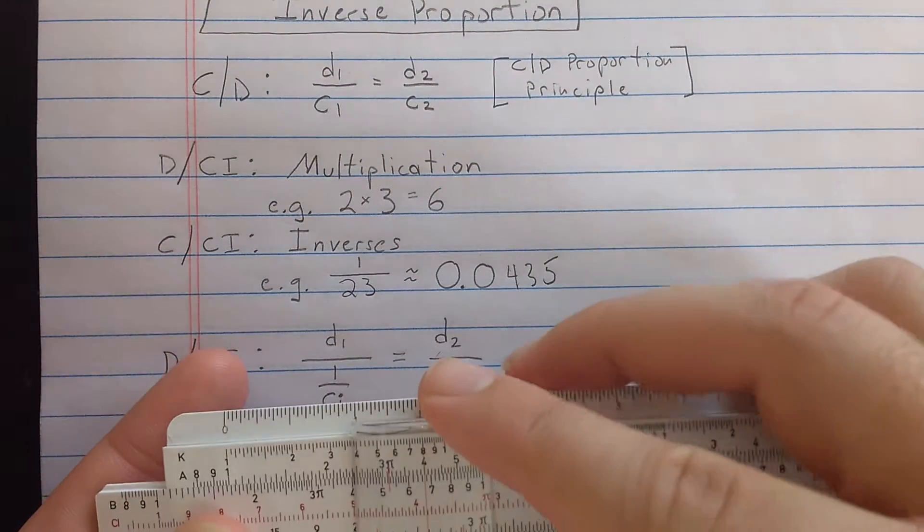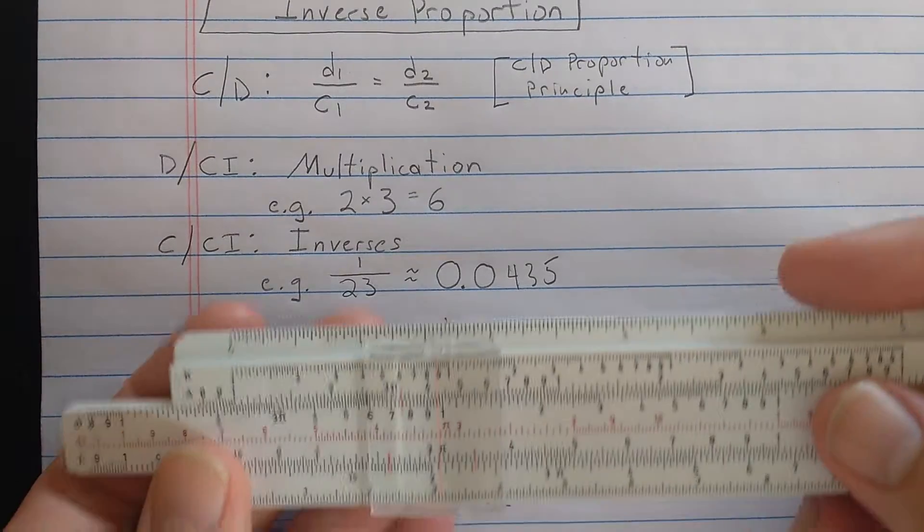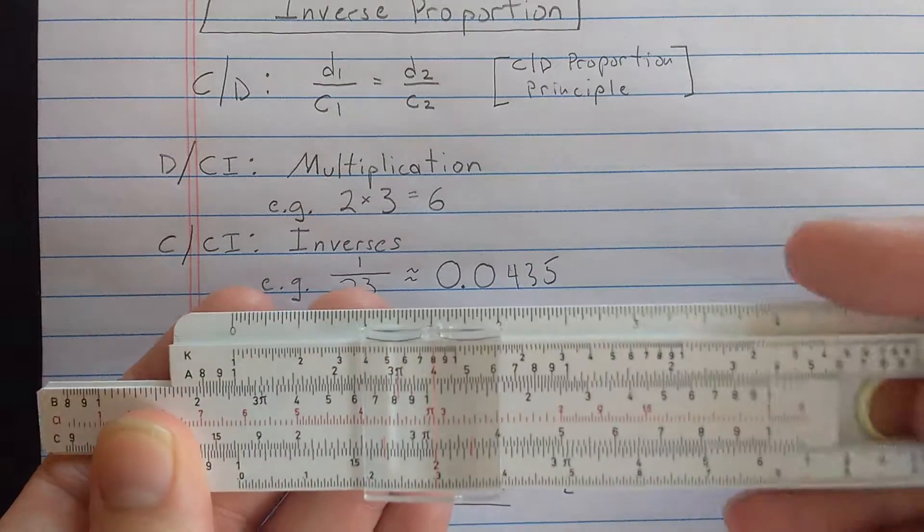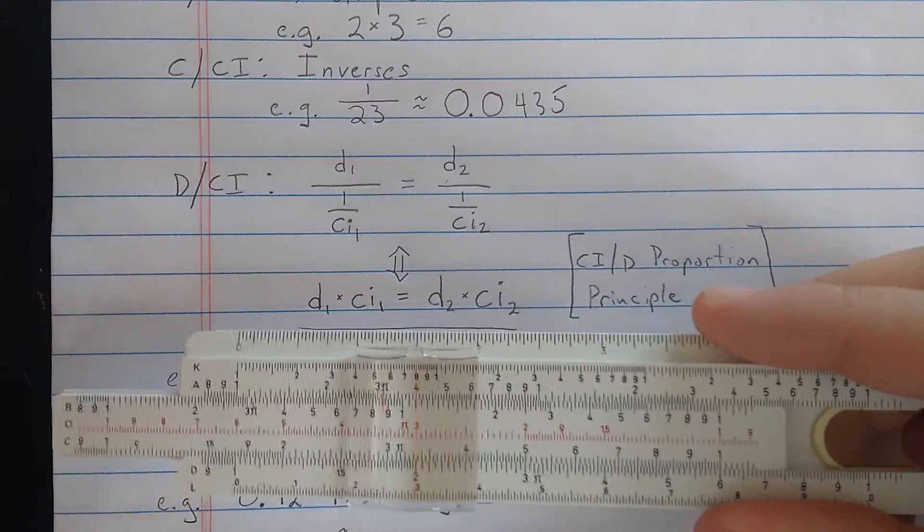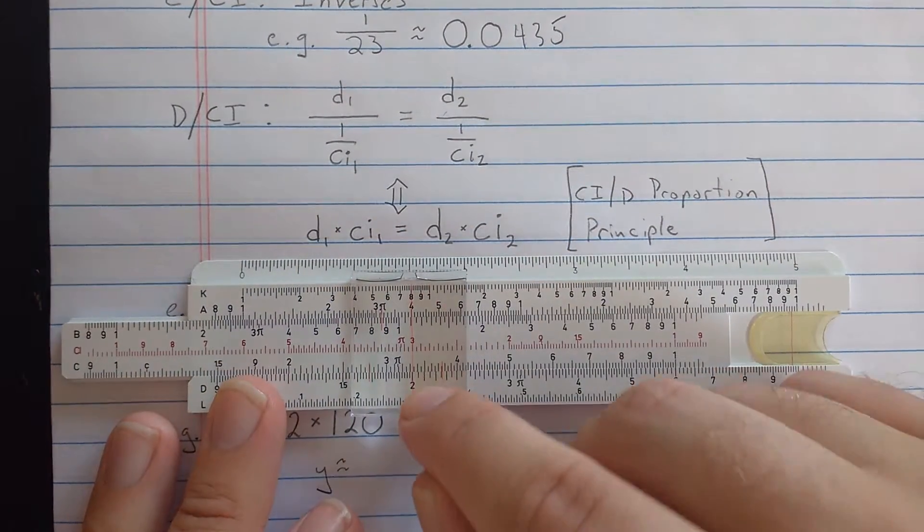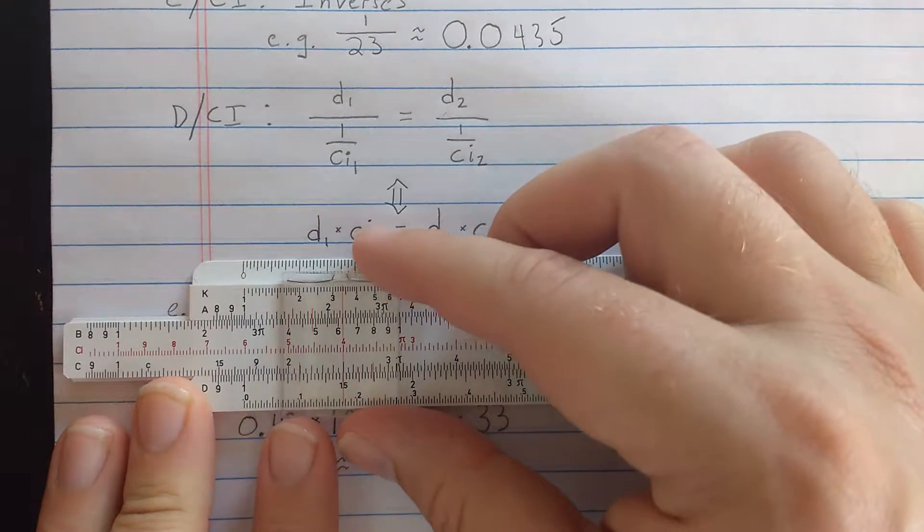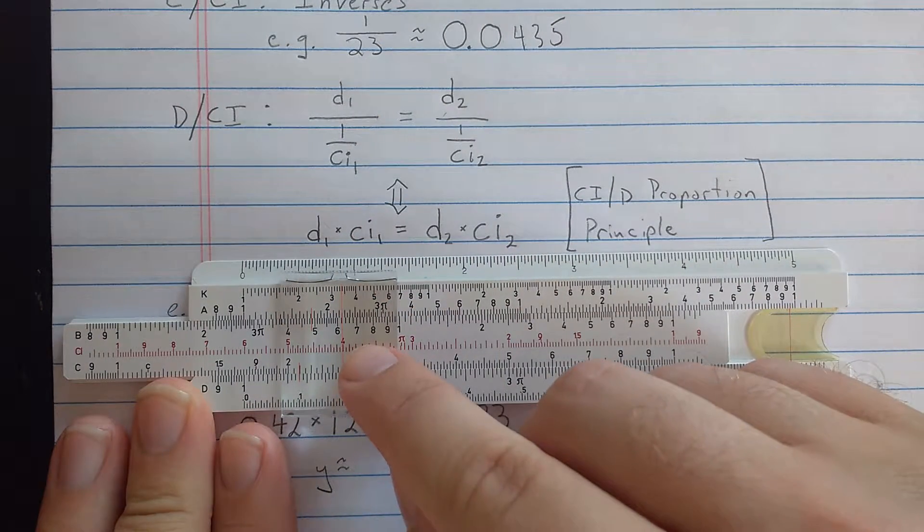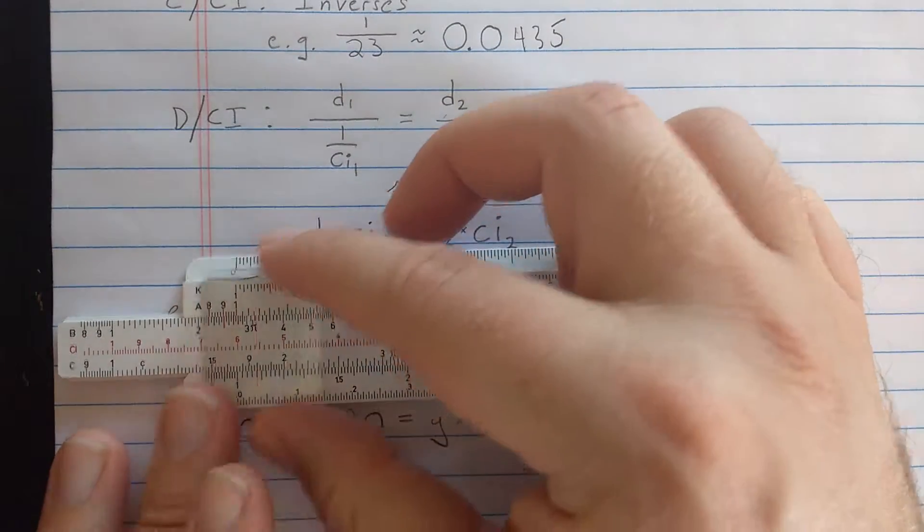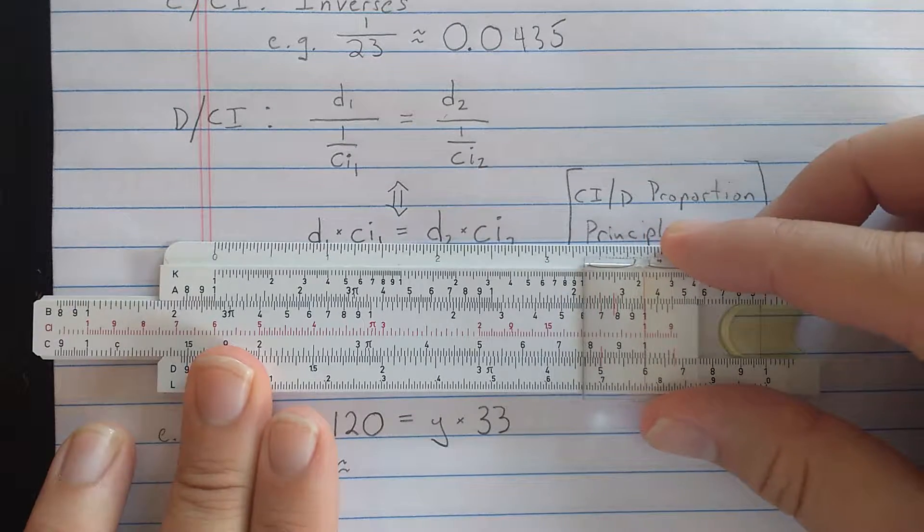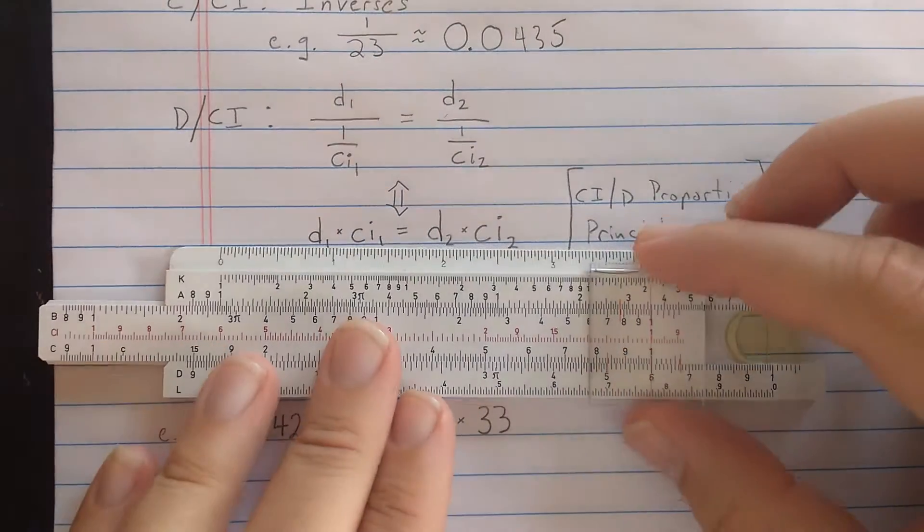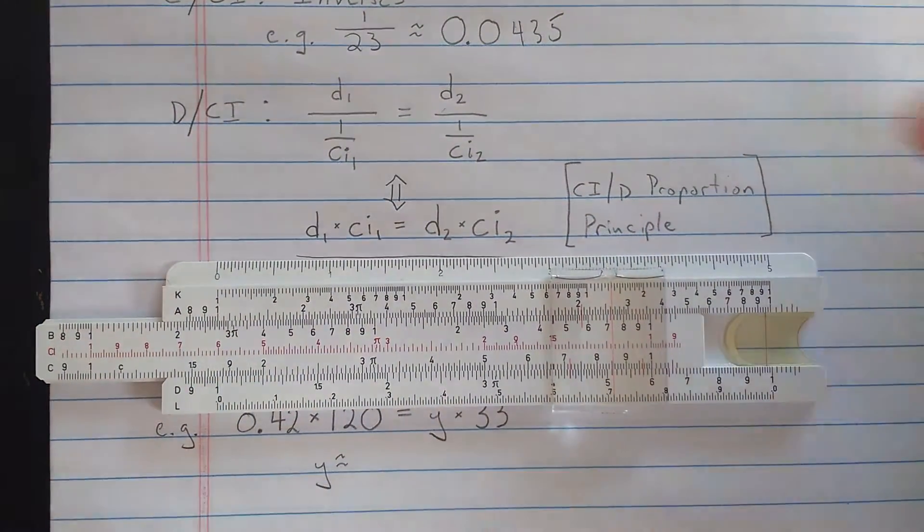The main idea is that if you read the D scale versus the CI scale, you get a constant product instead of a constant quotient like you get for the C slash D scale. So let's look at the 2 times 3 again. So here, let me find 2 on D and 3 on the CI. The product there is 6, right? Well, so you have 2 times 3 is 6. But if you came over to 1.5, you also get 1.5 times 4, which is 6. And then of course, if you find the 1 either at this end, or at the other index, the other number will be 6, reading D and CI. And so in fact, everywhere you set the cursor, you get product 6.